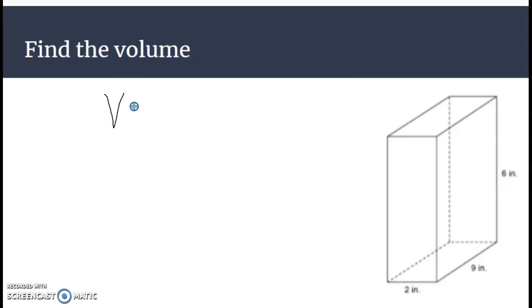To find the volume of a rectangular prism, all we need to do is length times width times height.